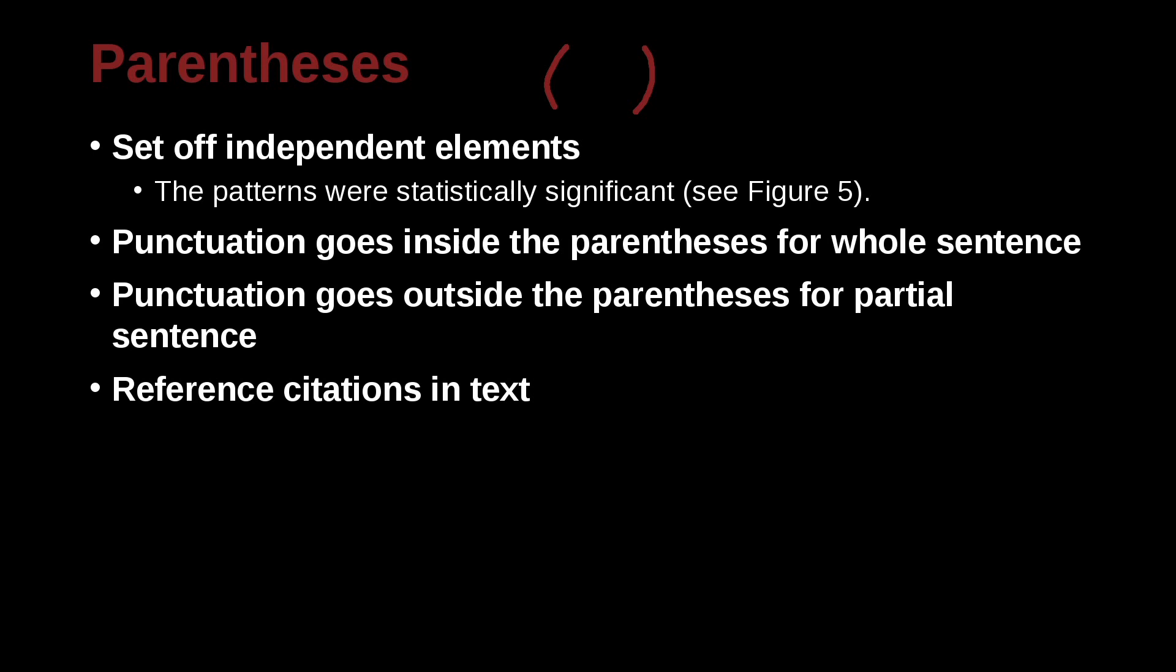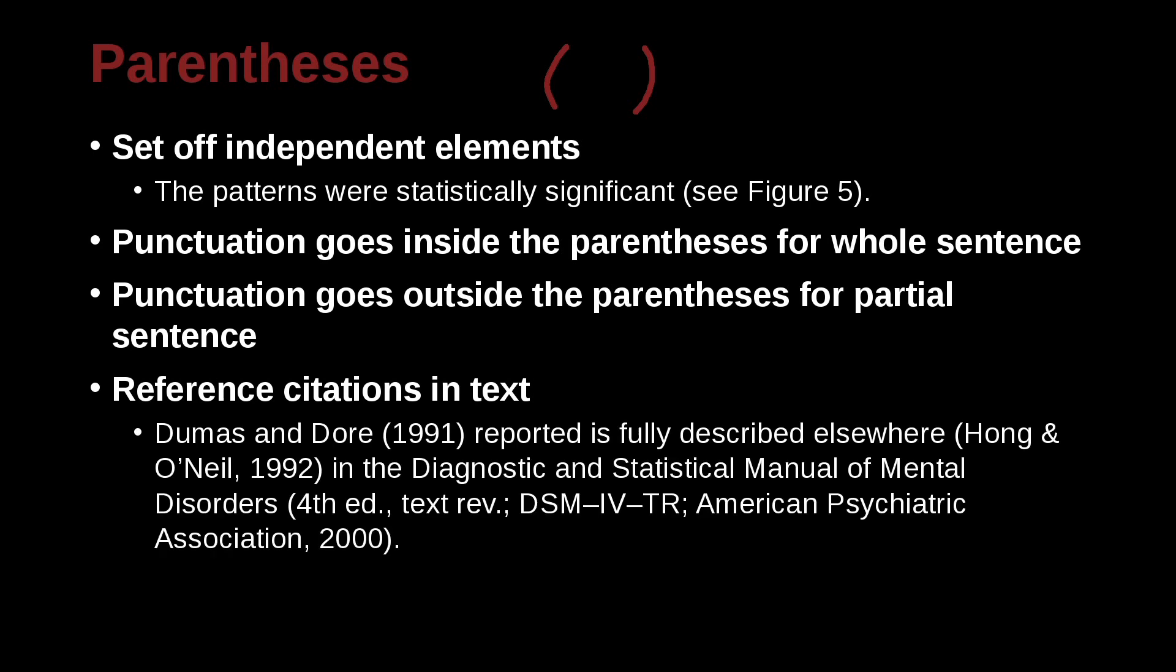Also, you use parentheses in reference citations that are inside your text. So for example, let's take a look here. Dumas and Dore, and here we have the date. So this is separate and a part of a citation. So we use parentheses. Reported is fully described elsewhere, Hong and O'Neill, 1992, because this is a citation. In the Diagnostic and Statistical Manual of Mental Disorders, and then here we're going to have the specification of what we're addressing. The fourth edition text revised, DSM-IV-TR, American Psychiatric Association, 2000.